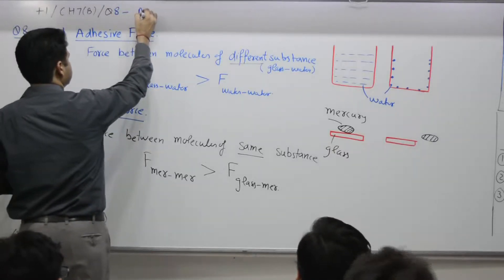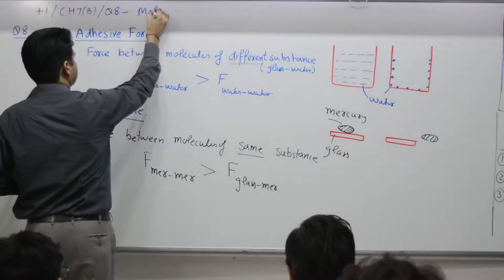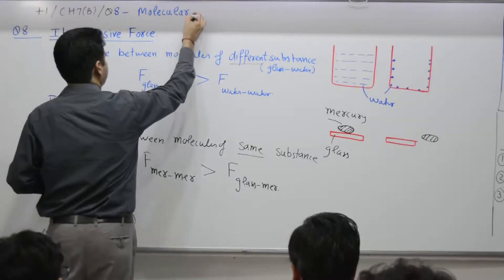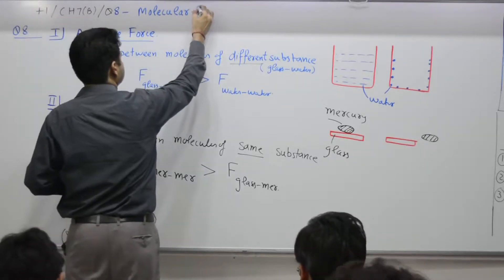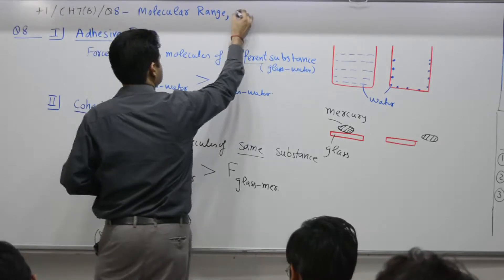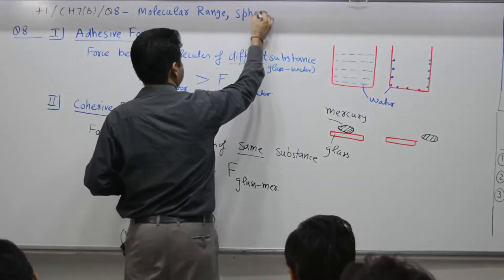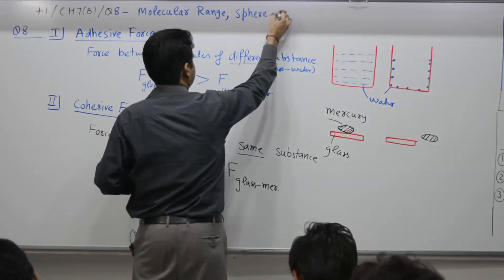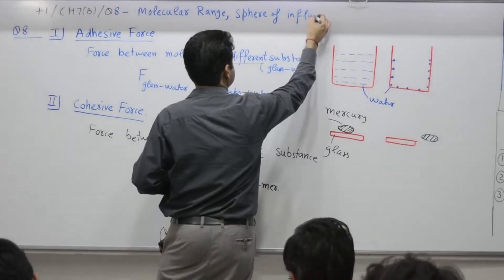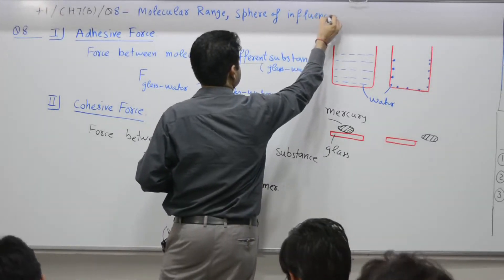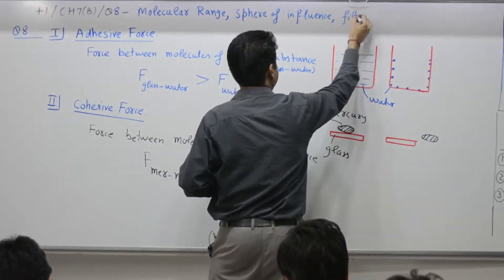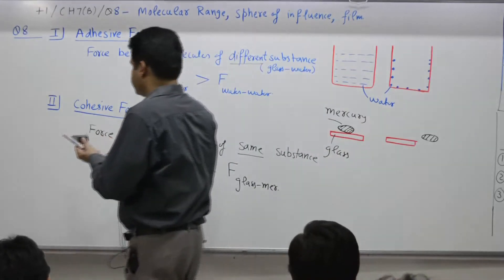Question number 8 deals with molecular range, sphere of influence, and surface film — three aspects.